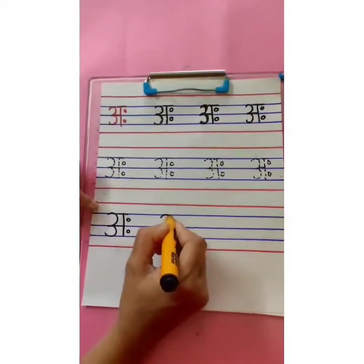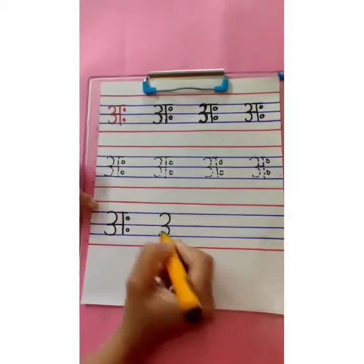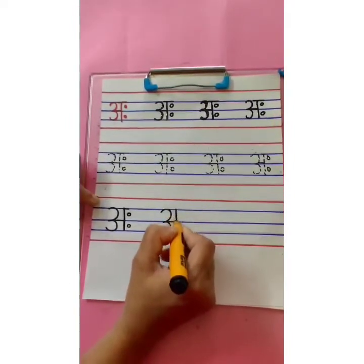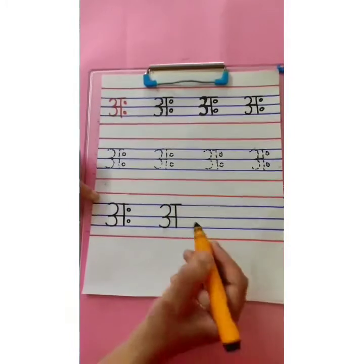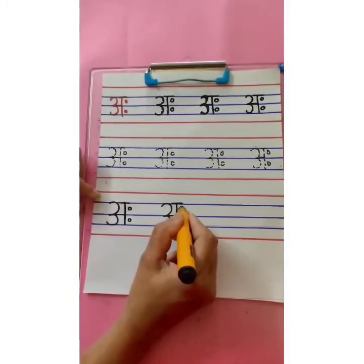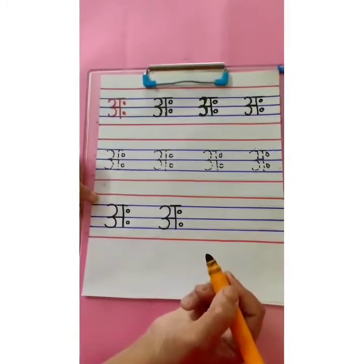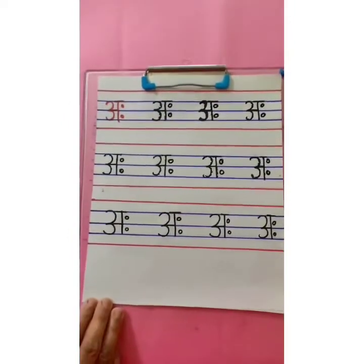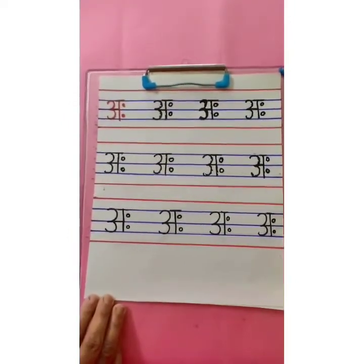One more time. Write number 3 within the three blue lines. Small sleeping line, standing line, over a small sleeping line, and two dots. Aha. This way we are going to complete the full page.